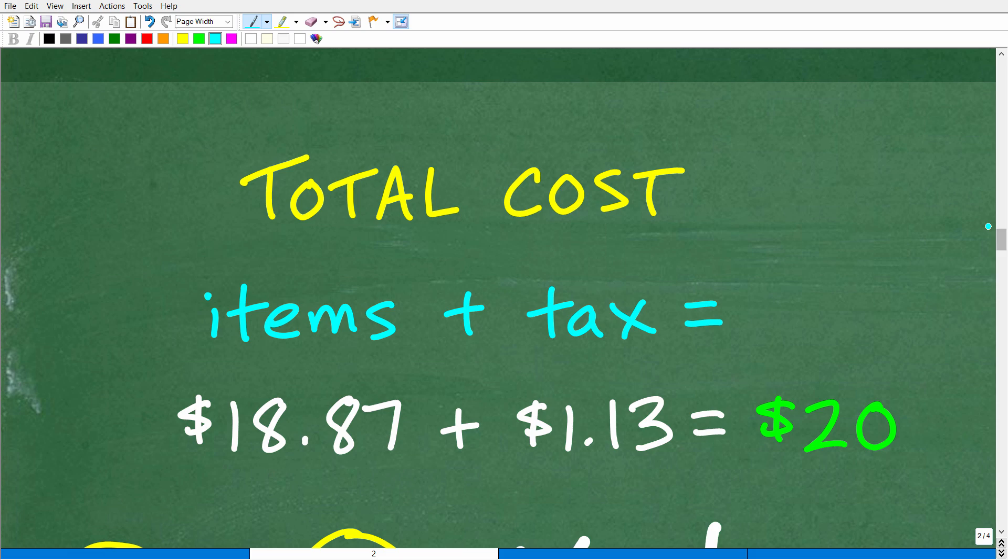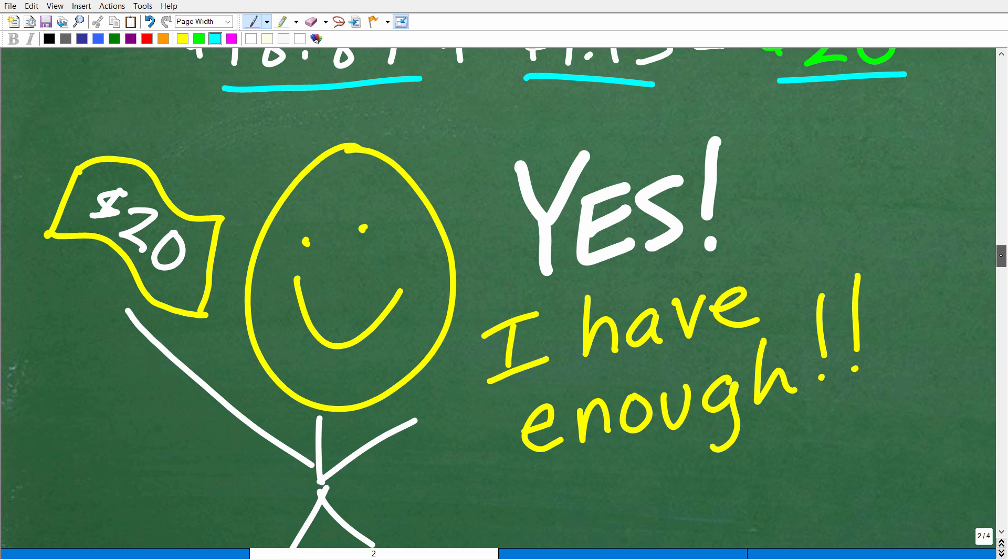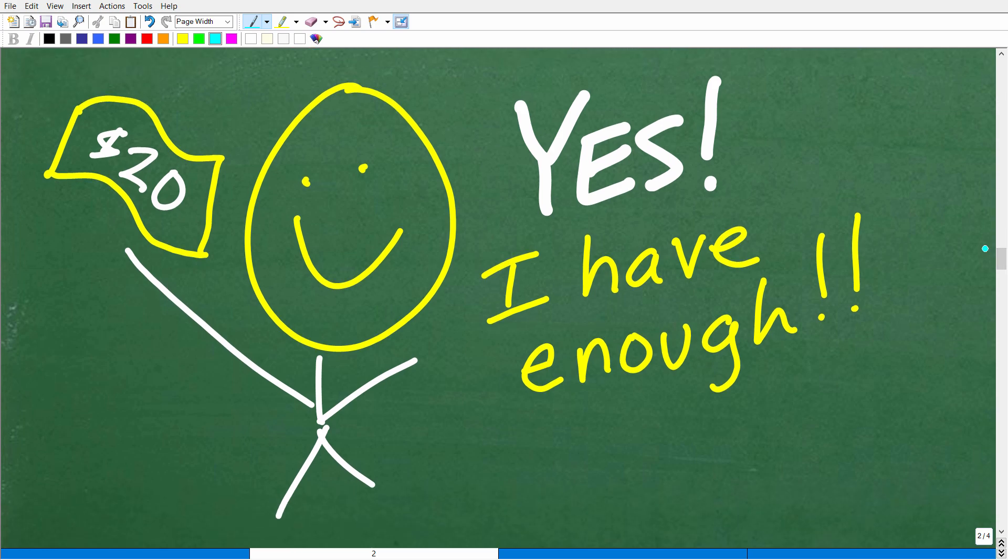All right, so our total cost is going to be the cost of the items plus the tax. So the items were $18.87. The tax is $1.13. And when you add those up, it comes out to be $20. So, yes, indeed, we are so happy. We have enough money to buy all these items and to pay for the sales tax.